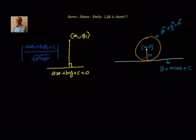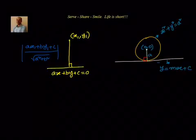That distance is given by ax1 plus by1 plus c divided by root of a square plus b square. Now we can leverage the same formula here because we know that the tangent is perpendicular to the circle at the point of contact. So we know the center, x1 y1 is 0 comma 0, and the line ax plus by plus c equal to 0 is y equal to mx plus c. So if you try to find out the perpendicular distance of point 0 comma 0 from the line y equal to mx plus c: